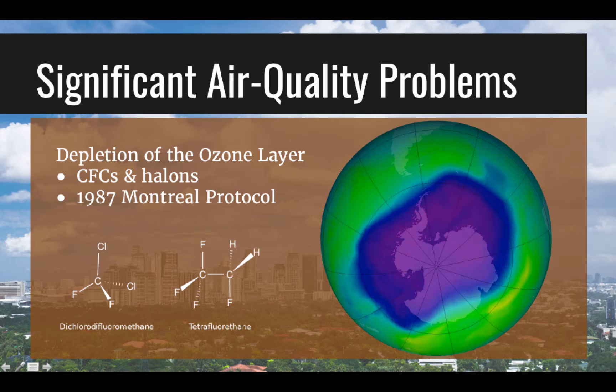Depletion of the stratospheric ozone layer is problematic because it reduces our protection from solar radiation. Development of a hole in the ozone layer above Antarctica has been tracked since the 1970s. This hole was primarily created by chlorofluorocarbons, or CFCs, which are compounds that persist in the atmosphere and break down ozone into oxygen. Other depleting compounds are halons, found in fire-extinguishing foams. The 1987 UN Montreal Protocol aims to decrease ozone-depleting compounds and allow ozone layer recovery by about 2050.